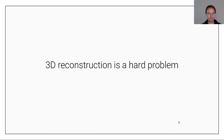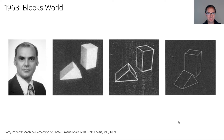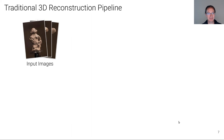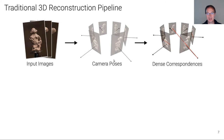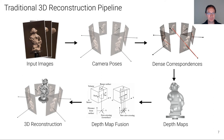3D reconstruction is actually a very hard problem and it has been researched already since the 1950s. A traditional 3D reconstruction pipeline takes a set of input images, first computes the camera poses using structure from motion or bundle adjustment, then computes dense correspondences across these images, calculates depth maps, which are then fused into a coherent 3D reconstruction that can be further optimized using mesh refinement or volumetric techniques.